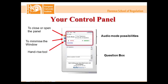This is the control panel you can see on your screen. The first feature is the small orange arrow — if you want to follow the webinar in full screen, you can close the control panel by clicking this button, and reopen it by clicking in the same place. You can also minimize the webinar to check something on your computer while remaining connected; the icon will stay on your taskbar. Below is the hand-raise tool — please click it now if you can see and hear me and can see the presentation.